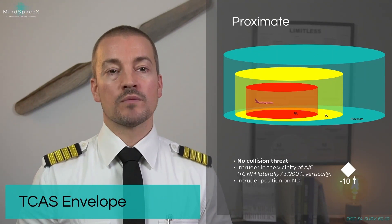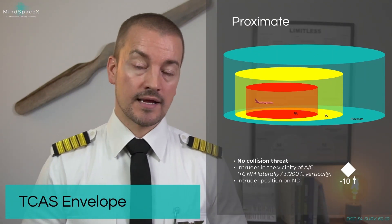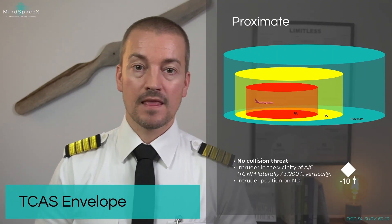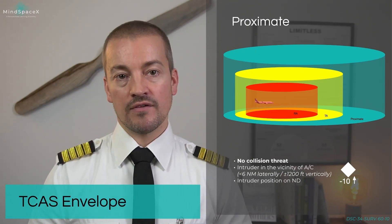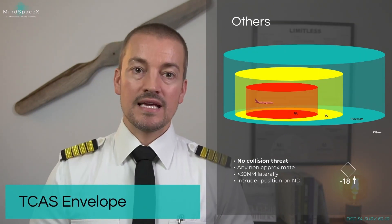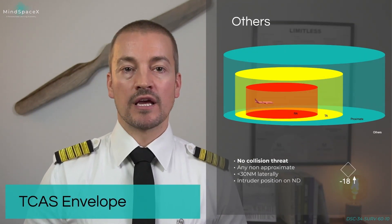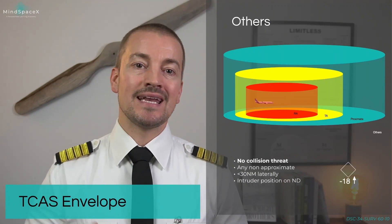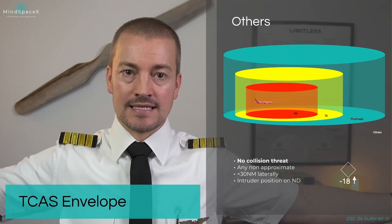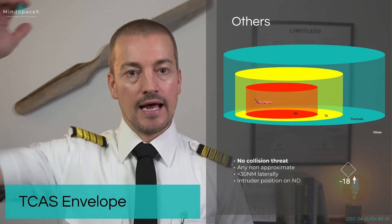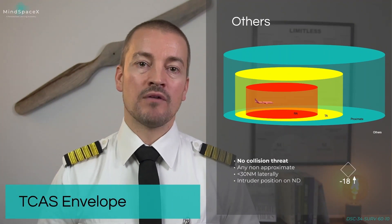Most intruders on your ND display are simply intruders within the vicinity of the aircraft. The aircraft is capable of looking 30 to 80 nautical miles ahead, 30 nautical miles to the side, and almost 10,000 feet above and below.